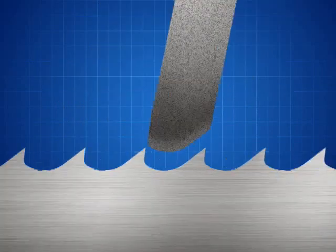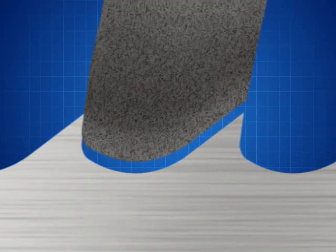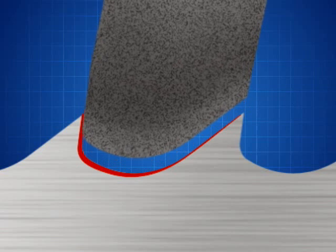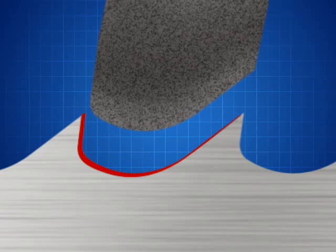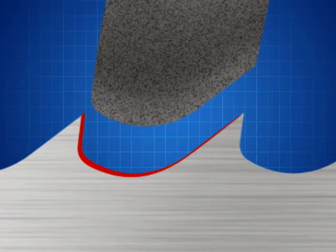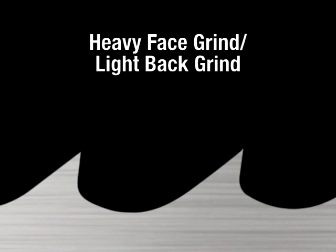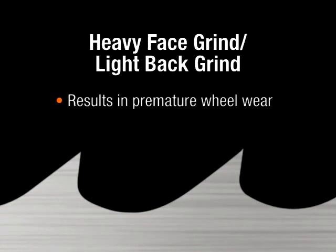If the wheel makes contact too early, it can misshape the tooth and remove too much material from the front of the gullet as the grinding wheel drops to the lowest point in the grinding process. This results in little, if any, material removed from the back angle. This is called a heavy face grind, light back grind, and generally results in premature wheel wear, thereby significantly reducing the life of the wheel.